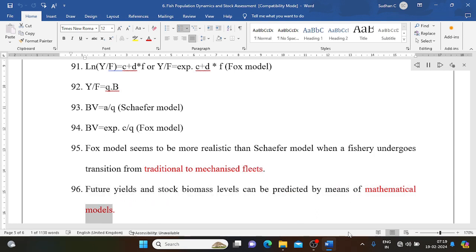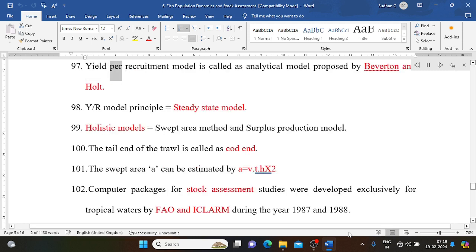Future yields and stock biomass levels can be predicted by means of mathematical models. Yield per recruitment model is called as analytical model proposed by Beverton and Holt. Y/R model principle equals steady state model. Holistic models equal swept area method and surplus production model. The tail end of the trawl is called as cod end. The swept area can be estimated by A equals v times t times h times 2.